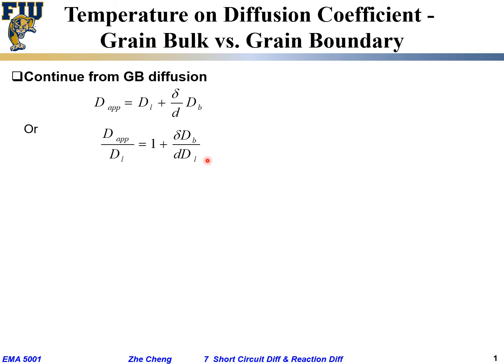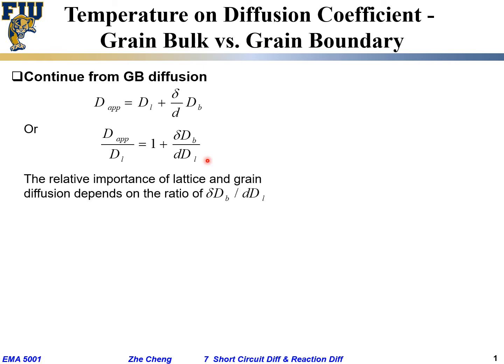The relative importance of lattice or grain boundary diffusion depends on the ratio (delta * D_B) / (d * D_L) — how much the lattice contributes versus how much the grain boundary contributes depends on this ratio. Normally D_B is greater than D_L; the diffusion coefficient along the boundary is greater than through the lattice.